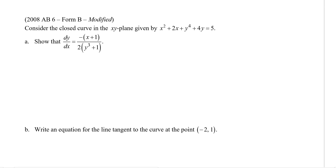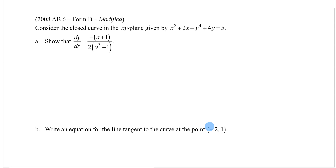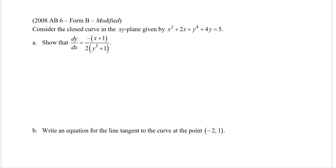We'll look at one more AP-style question on this topic, then move on to related rates, which is essentially an application of implicit differentiation. The problem says: consider the closed curve in the xy-plane given by x squared plus 2x plus y to the fourth plus 4y equals 5. They use the term curve because these are relations, not functions.